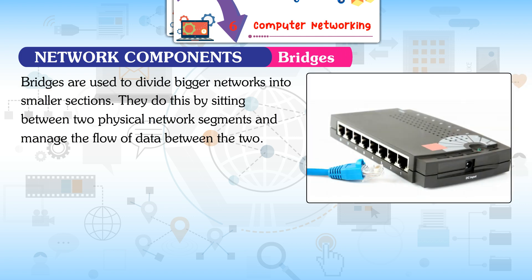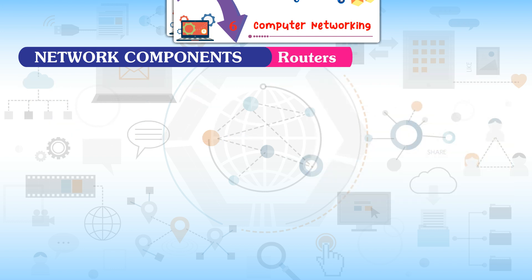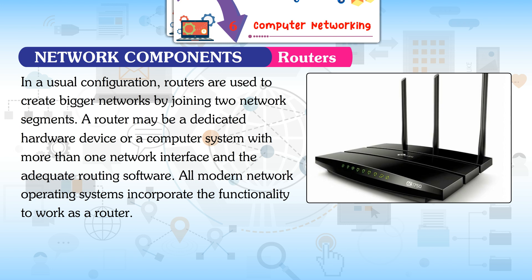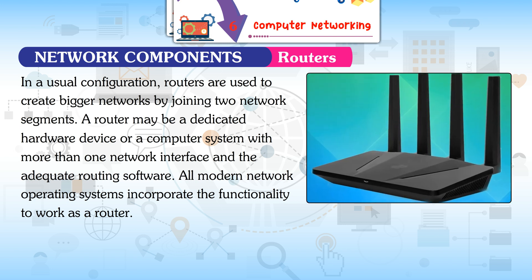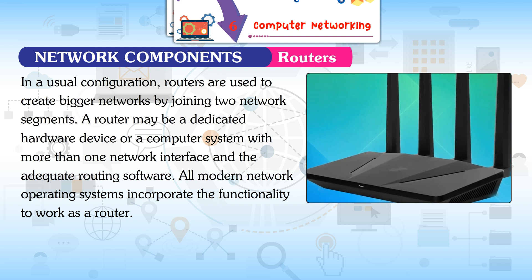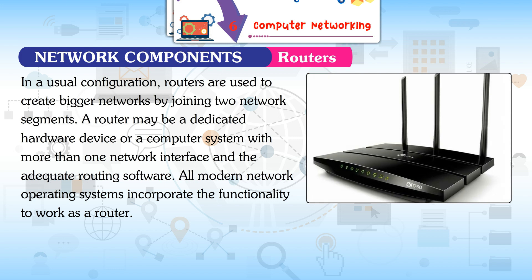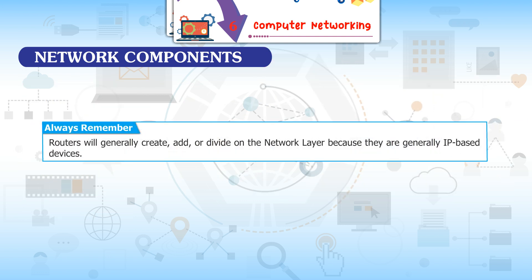Bridges are used to divide bigger networks into smaller sections by sitting between two physical network segments and managing the flow of data between them. Routers: In a usual configuration, routers are used to create bigger networks by joining two network segments. A router may be a dedicated hardware device or a computer with more than one network interface and adequate routing software. Routers generally operate on the network layer because they are generally IP-based devices.